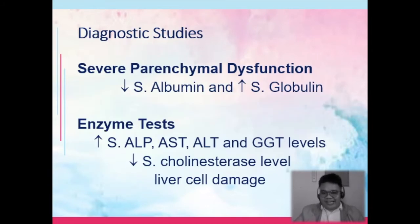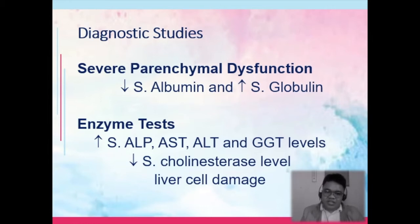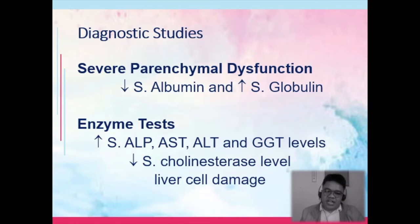For diagnostic tests, in severe parenchymal dysfunction, the laboratories to look at include albumin and globulin — there is a decrease of serum albumin and a probable increase of serum globulin. For enzyme tests, all are indications of liver damage: alkaline phosphatase, AST/ALT (congruent to SGPT and SGOT), and GGT. These levels increase in liver damage.